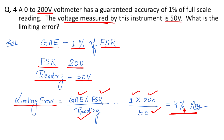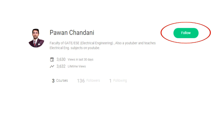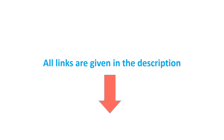So 4% is the limiting error in the reading. It was a simple question — just keep in mind that limiting error is the maximum error in the reading and guaranteed accuracy error is the maximum error in the full scale reading. In the next lecture we will take a few more problems based on error analysis. If you have any query, ask in the comment section. Please share this lecture with your friends, subscribe to my YouTube channel, click the bell icon, and follow me on Unacademy — the link is in the description. Thank you for watching.